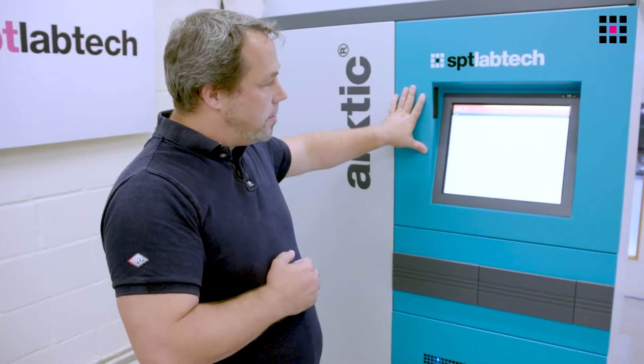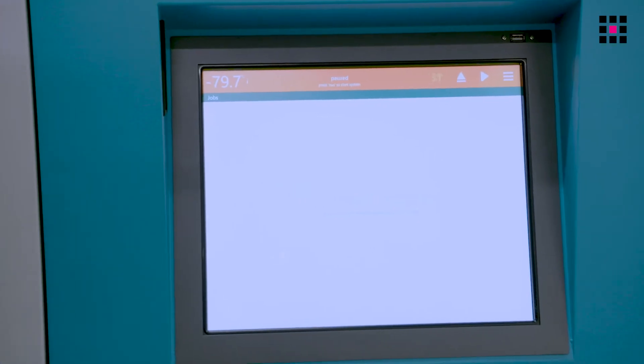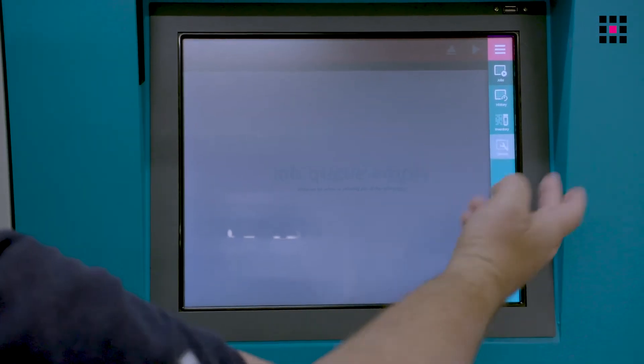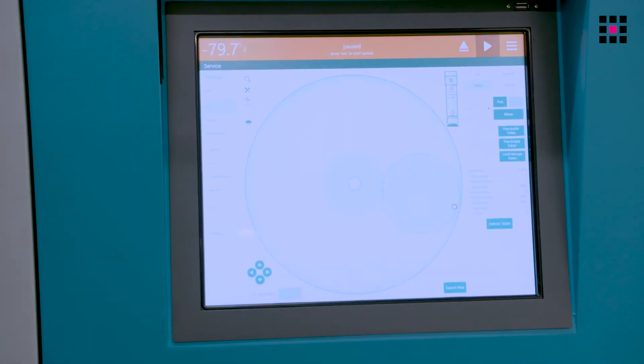Up here you have the HMI interface, where you can operate the machine with the jobs, history, and you can do service intervention from here, which is all a graphic interface.